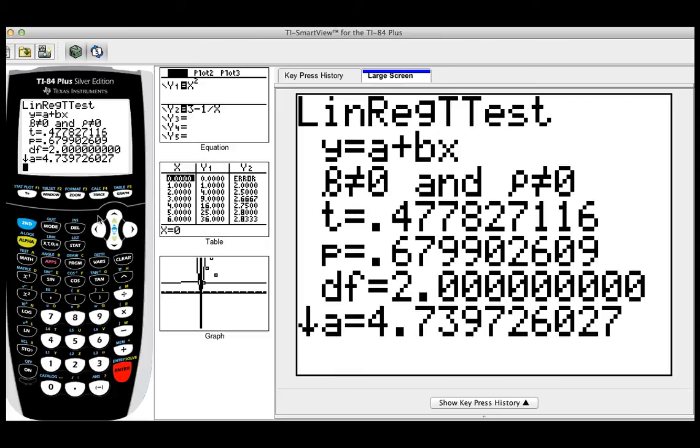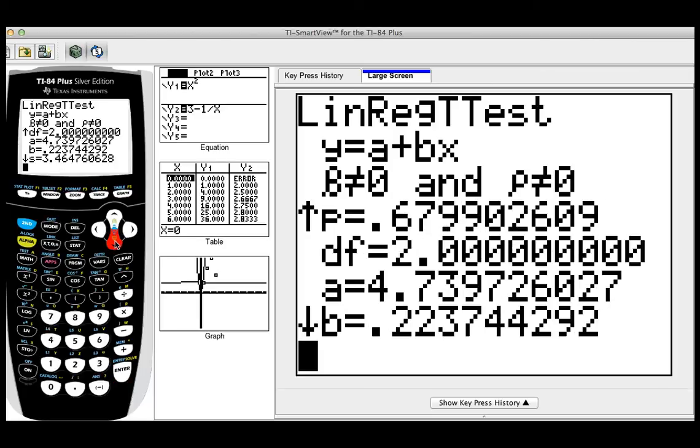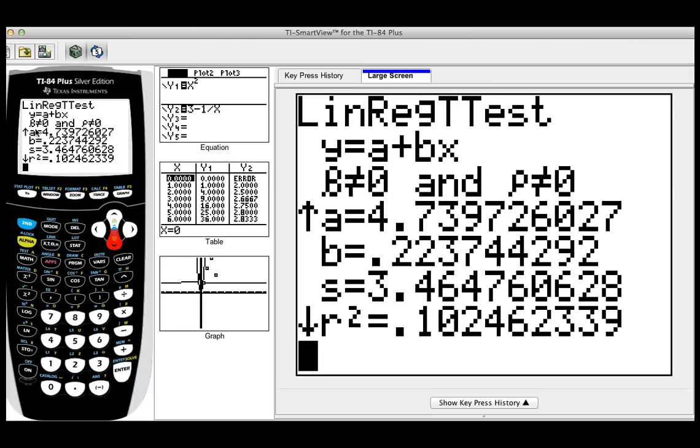And look at this. It's going to give you all the information you want. It's going to give you, if you go all the way down, it will give you the a value, which is going to be the constant, the b value, which is the slope.